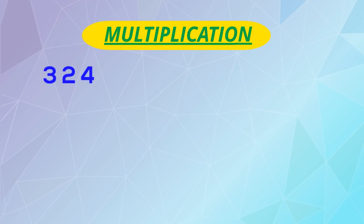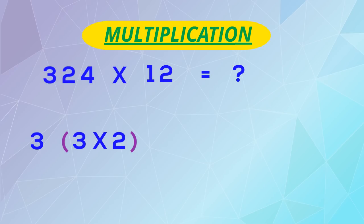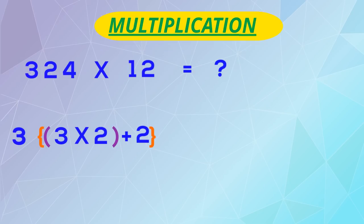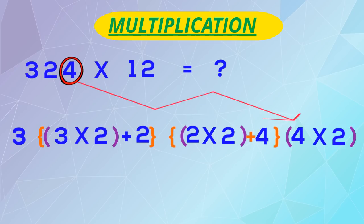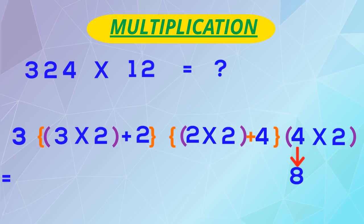Our second example: a three digit number 324 into 12. The first number 3 will come down as it is, then we take 3 and multiply with 2 and add the next digit here 2. Then we take this 2 and multiply with 2 and add the next number 4. Finally, last digit 4 will get multiplied with 2. 4 into 2 is 8, 2 into 2 plus 4 is 8, 3 into 2 plus 2 is 8, 3 will come down. Our answer: 3888.